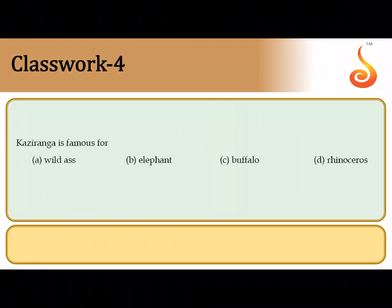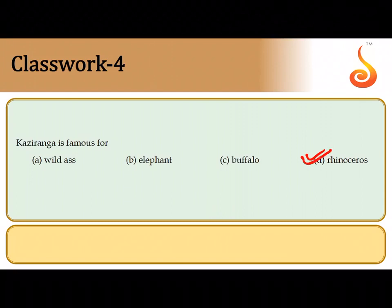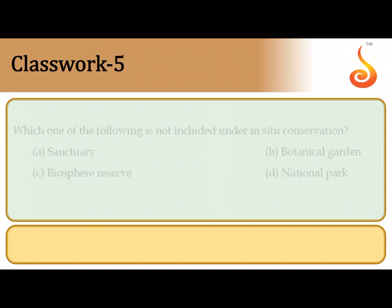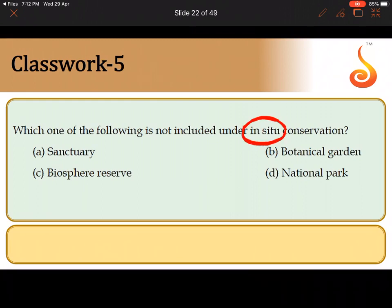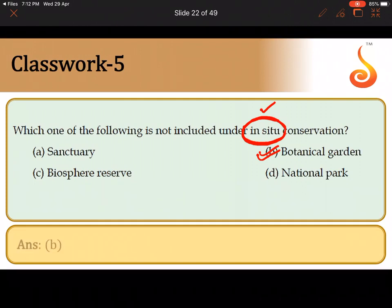The fourth question: Kaziranga National Park of Assam is famous for the one-horned rhinoceros — it is a conservation unit for one-horned rhinoceros, so the answer is option D. The fifth question asks which is not included under in-situ conservation. In-situ conservation means conserving an organism in its natural habitat. A botanical garden is not in-situ conservation because the plant is taken away from its natural habitat and conserved in an artificial setup — it is ex-situ conservation. The odd one out is option B.